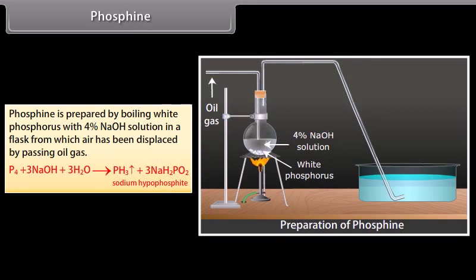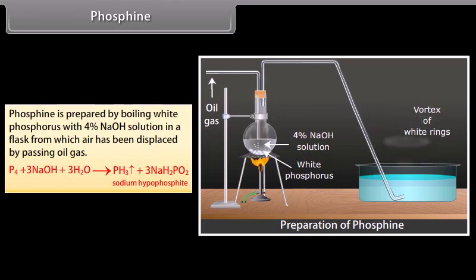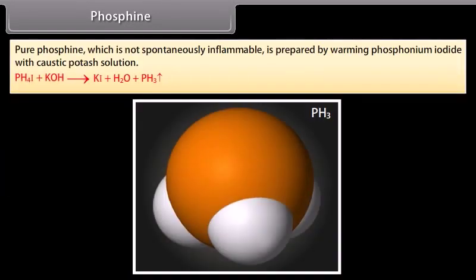Phosphine is prepared by boiling white phosphorus with 4% NaOH solution in a flask from which air has been displaced by passing oil gas, which is continuously bubbled through to displace air. The PH3 produced contains considerable amounts of H2 and little P2H4, and is inflammable in air. Pure phosphine, which is not spontaneously inflammable, is prepared by warming phosphonium iodide with caustic potash solution.